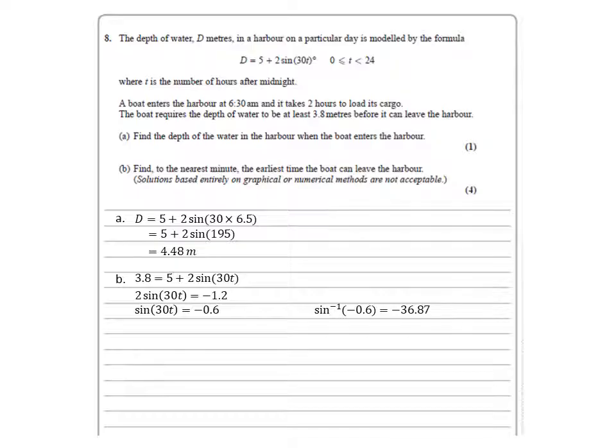Putting this into our calculator will give us an inverse sin of minus 0.6, minus 36.87. But we need a time that's in the future, not in the past, hence we need a positive answer.